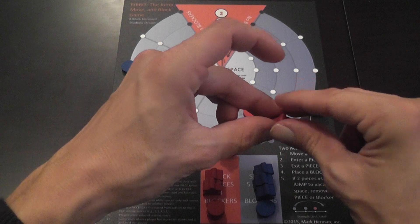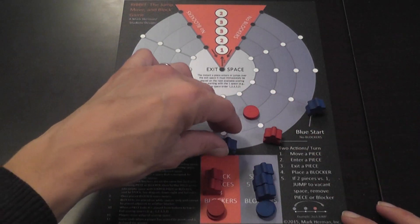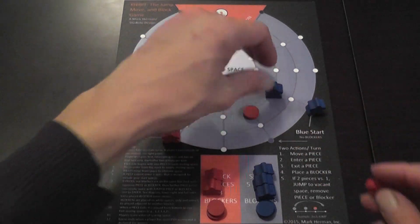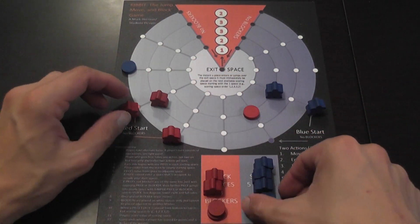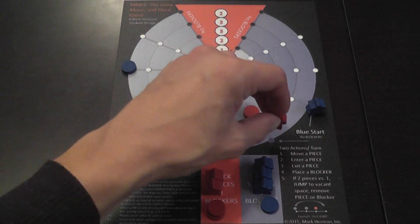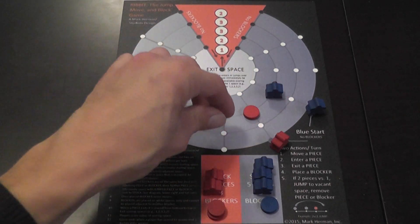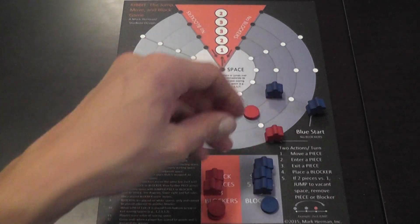This actually also applies in case that there is a blocker here, then you can jump the blocker and the blocker can be removed. Again, blockers cannot move but they can be removed if jumped like regular pieces.